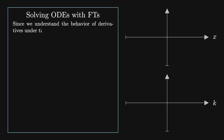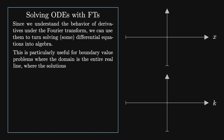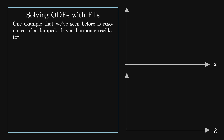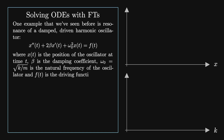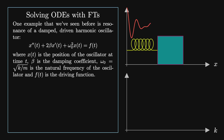Now that we understand the behavior of derivatives under the Fourier transform, we can use them to turn solving some differential equations into algebra. This is particularly useful for boundary value problems where the domain is the entire real line and the solution goes to zero as x goes to plus or minus infinity. One example we have seen before is resonance of a damped driven harmonic oscillator: x double prime of t plus 2 beta x prime of t plus omega-naught squared x of t equals f of t, where beta is the damping coefficient, omega-naught equals root k over m is the natural frequency, and f of t is the driving function. We've already studied this in terms of Sturm-Liouville theory, but here we'll look at some different properties by solving it with a Fourier transform.